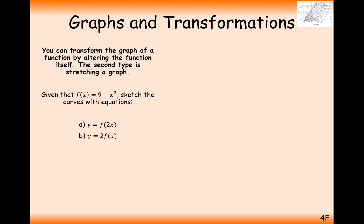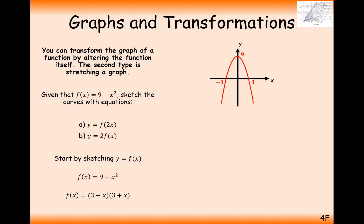Let's have a go at some questions. We're going to sketch the graph 9 minus x squared and apply two transformations. How do we draw this graph? Well, let's factorise it, find its roots, and plot the graph. When x is 0, we get the y-coordinate on the intersection there.